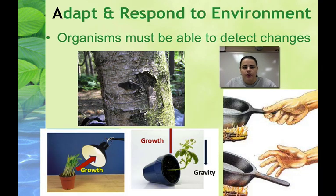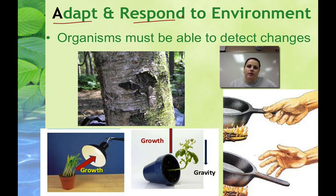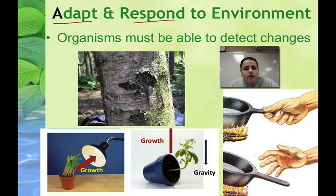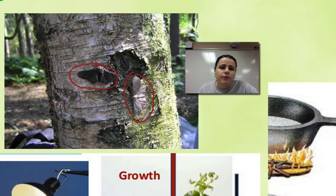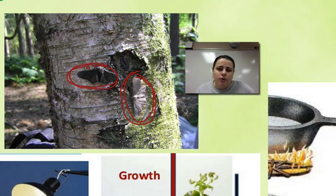Living things also need to adapt and respond to the environment — they have to detect changes and respond accordingly. An adaptation is a trait that helps an organism survive and reproduce. A response is a reaction to things around you or inside you. This is an example of a moth called the peppered moth. There's a dark version and a light version — same species, but two different colored versions.